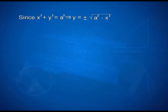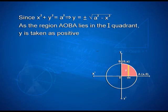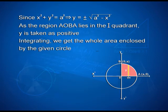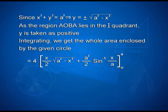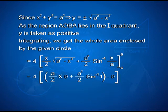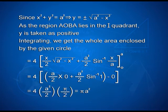Since x² + y² = a², that implies y = ±√(a² - x²). As the region AOB lies in the first quadrant, y is taken as positive. Integrating, we get the whole area enclosed by the given circle equal to 4·[x/2·√(a² - x²) + a²/2·sin⁻¹(x/a)] from 0 to a. On applying limits, we have 4·[a/2·(0) + a²/2·sin⁻¹(1) - 0] = 4·[a²/2·π/2] = πa².